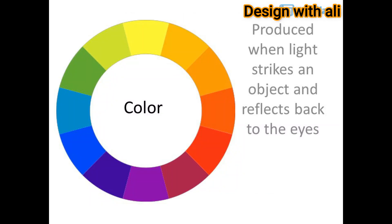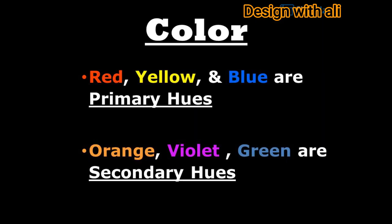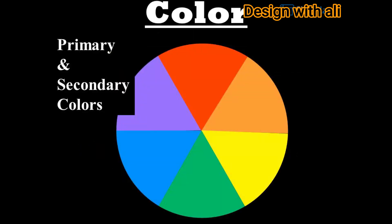Color is produced when light strikes an object and reflects back to the eyes. Red, yellow, and blue are primary hues. Orange, violet, and green are secondary hues. These make up the primary and secondary colors.